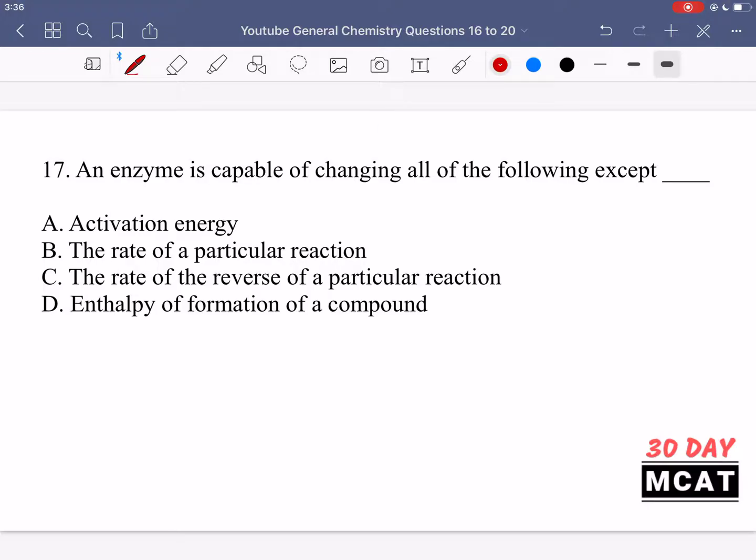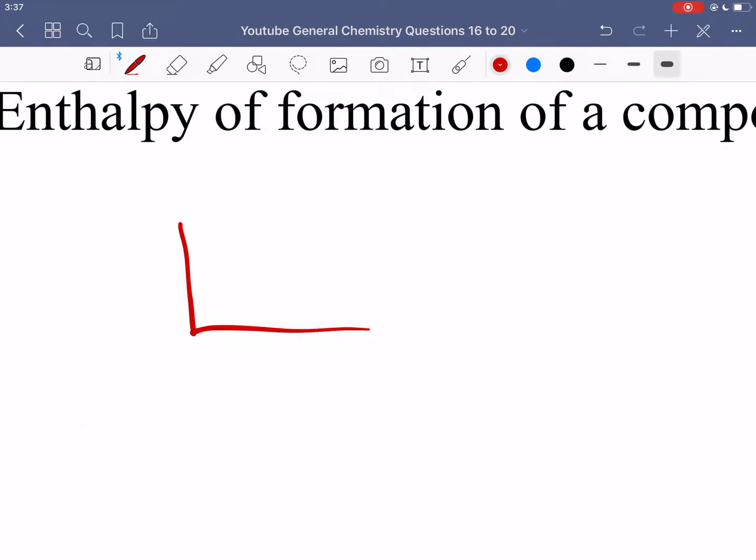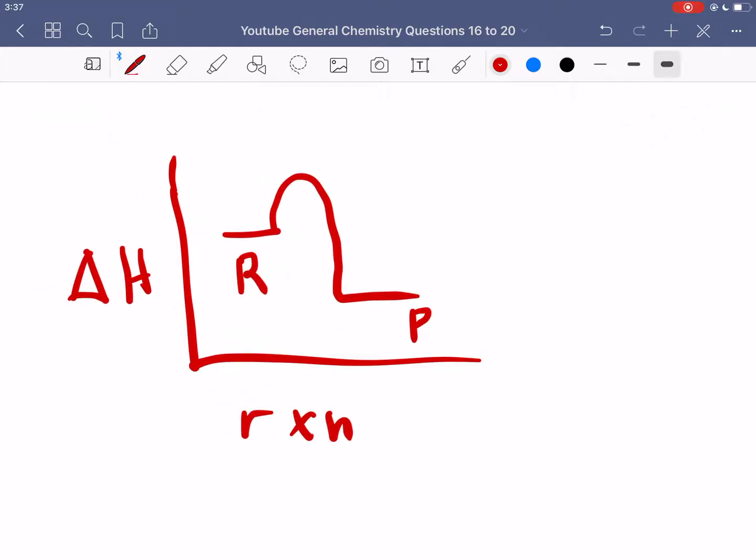In question 17 it says an enzyme is capable of changing all of the following except blank. If we have an energy diagram with the x-axis showing progression of the reaction and y-axis showing energy, on the left side we have reactants and right side we have products. We have to go over this energy barrier before we can turn reactants into products. At the top we have the transition state.